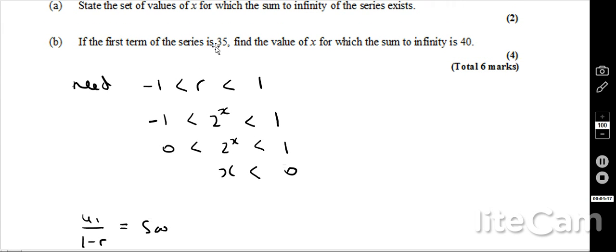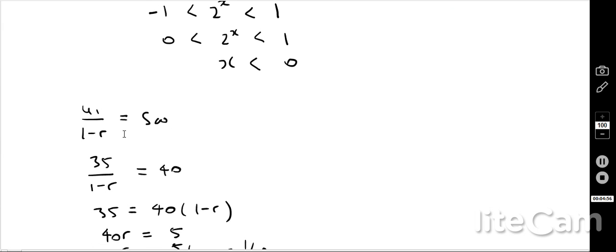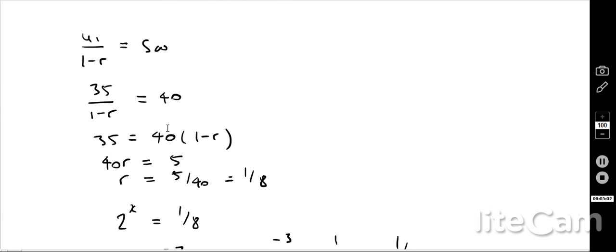The second part tells us that the first term is 35. We want to find the value of x for which the sum to infinity is 40. Okay, so we use our formula u1 over 1 minus r is sum to infinity formula. We then put the values in, so 35 is u1, so 1 minus r is equal to 40. We rearrange that and we're going to get r is equal to 5 over 40, which is equal to 1 over 8.